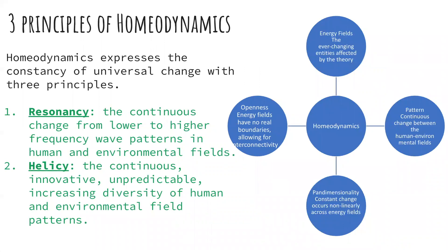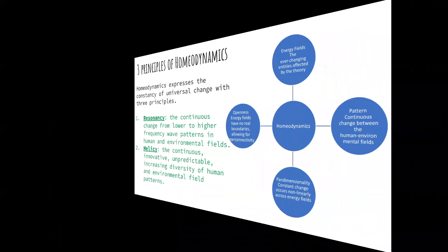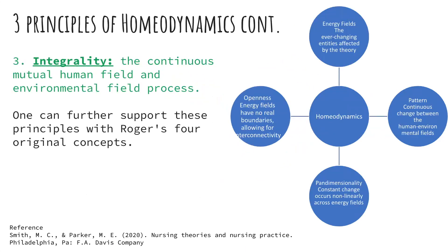One principle is homeodynamics, which expresses the consistency of universal change with three separate principles. The first is resonancy, which is continuous change from lower to higher frequency wave patterns — low frequency to high frequency, but there is a continuous change in that resonancy. Number two is helicy, which is the increasing diversity of human environmental field patterns, so no one field is ever the same and is always in the process of change. The third is integrality, which is a mutual human and environmental energy field process. Looking at the graphic, energy fields, pattern, pandimensionality, and openness — the four originally postulated principles — come together to create homeodynamics.